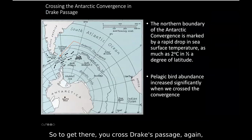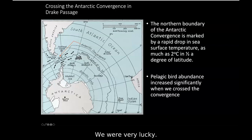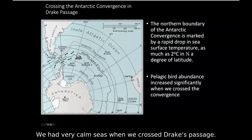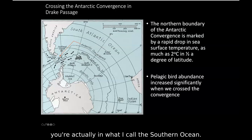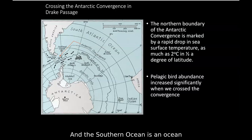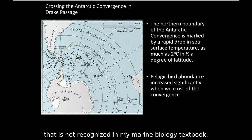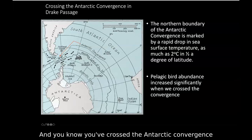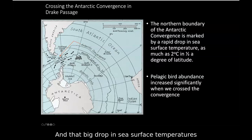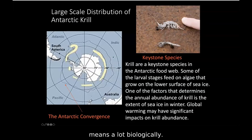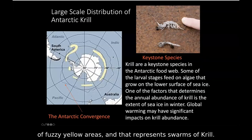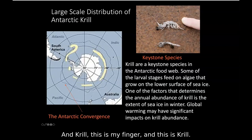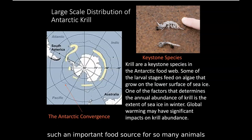To get there, you cross Drake's Passage, famous for its rough seas — we were very lucky to have calm seas. As soon as you cross the Antarctic Convergence, you're in what I call the Southern Ocean, which my marine biology textbook doesn't recognize but I think deserves distinction as a separate ocean. You know you've crossed it when you get a big drop in sea temperature. That drop is significant biologically — you can see swarms of krill in the yellow fuzzy areas in this picture. Krill is a crustacean and a keystone species, an enormously important food source for so many animals.